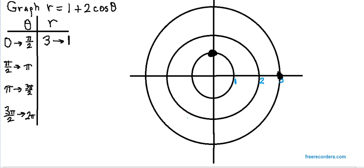We know equations of the form a plus b cosine theta, or a plus b sine theta, are limaçons. If a and b were equal, like 1 plus 1 cosine theta, we'd get a cardioid, but here it's a limaçon because the coefficients are unequal.